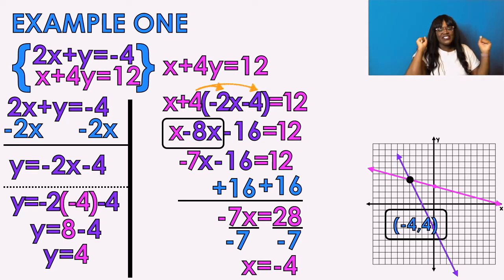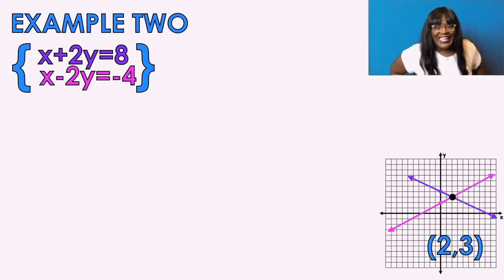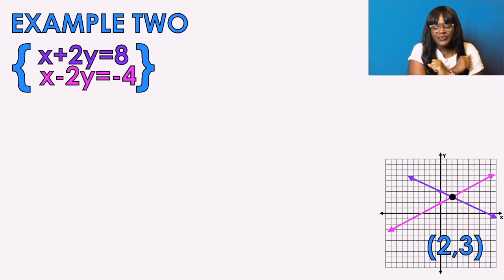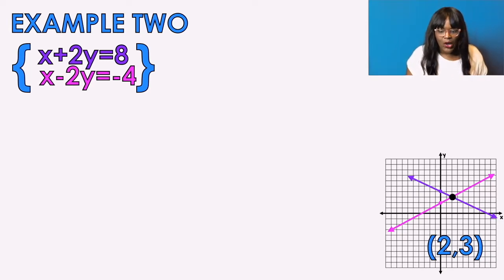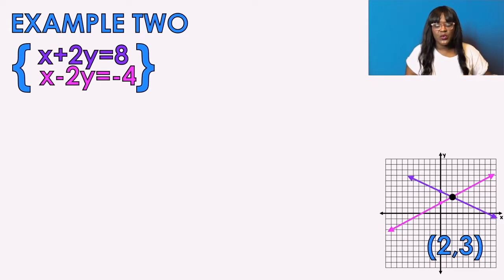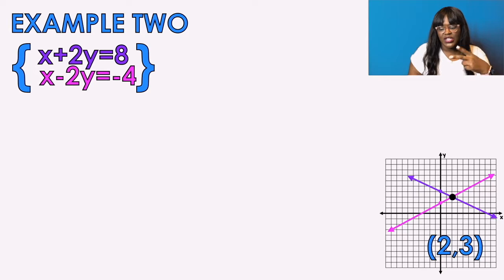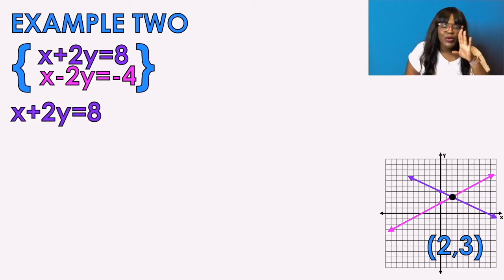Example number two out of six. Again, we did these problems already if you watched that last video. I know the lines meet at 2 comma 3. I need to choose an equation — which will be easier to isolate a variable? We like isolating Y, but Y has a coefficient here, so it's a step more complicated. We'll choose X because X is isolated in the first equation and also in the second equation. We'll go purple because purple's on top.